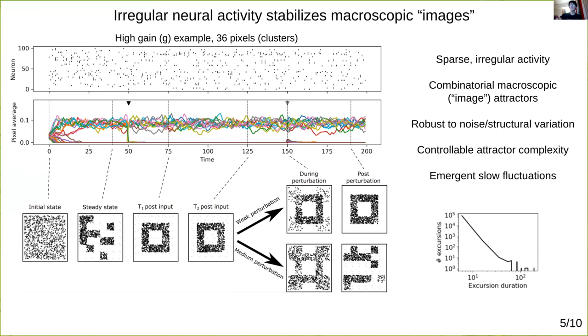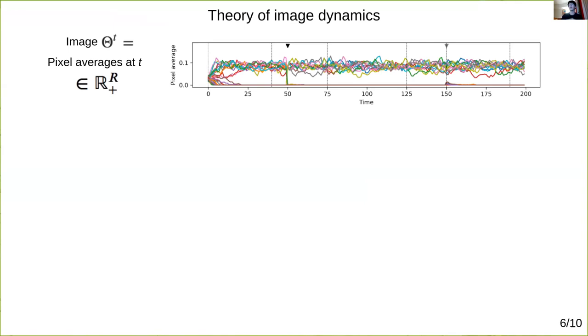It turns out we can answer this theoretically. To do so, we study the macroscopic dynamics of the image, which we'll call theta, which is just the average pixel intensities at time t, a vector in r dimensional space with all positive values.